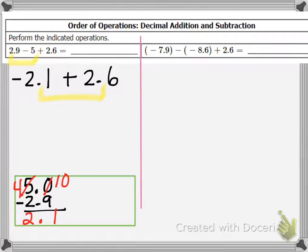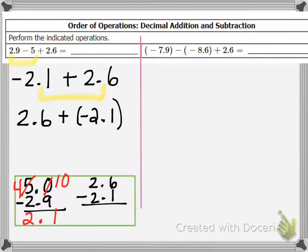Another way to think about this, we're going to do negative 2.1 plus 2.6. Another way to think about it is to rewrite it as 2.6 plus negative 2.1. Those are equivalent expressions. And then really all you're doing is the number 2.6 minus the number 2.1, which gives you positive 0.5 because 2.6 is larger than 2.1.